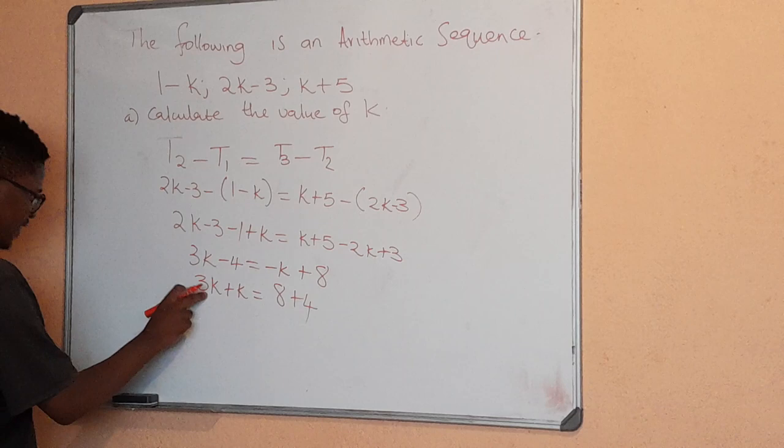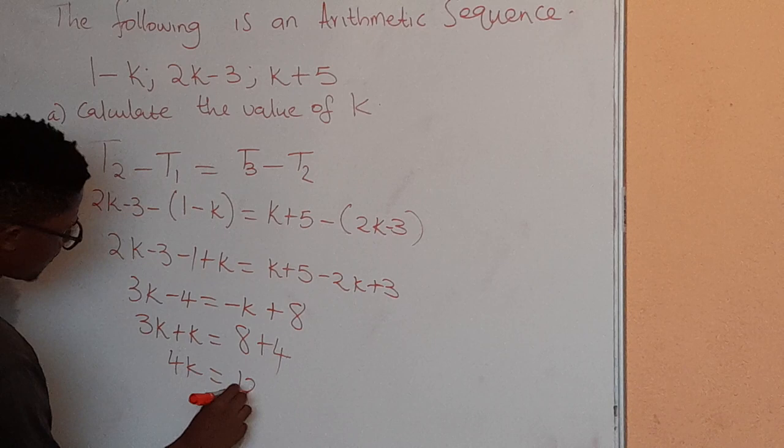3k plus k is 4k, 8 plus 4 is 12, and we'll divide everything by the coefficient of k, which is 4, and this side we'll divide by 4.